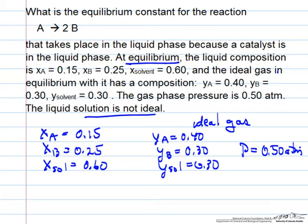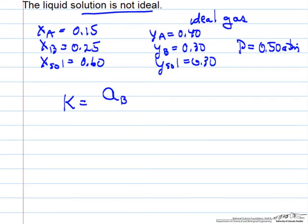The liquid solution is not ideal. We want the equilibrium constant, which is defined in terms of activities: the products raised to the stoichiometric power over the activity of reactants.